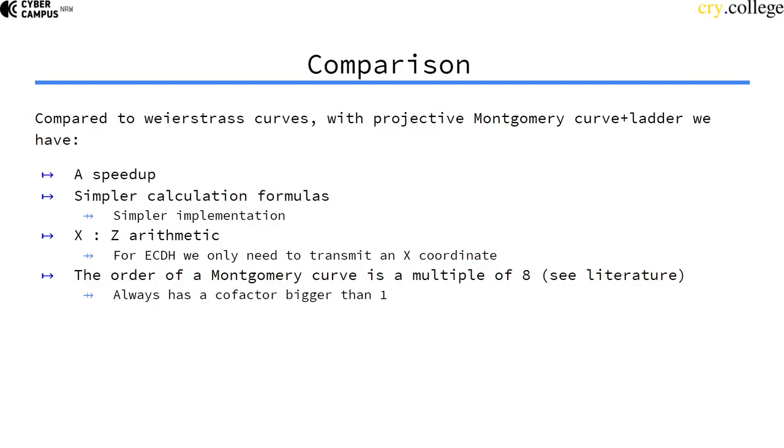Another point I want to mention, although it's not that important for you within this course, is that the order of a Montgomery curve, so the number of points, is always a multiple of 8. So this means we can't have cofactor 1 curves, which can be problematic in some corner cases, but we won't worry about those within our lecture here.